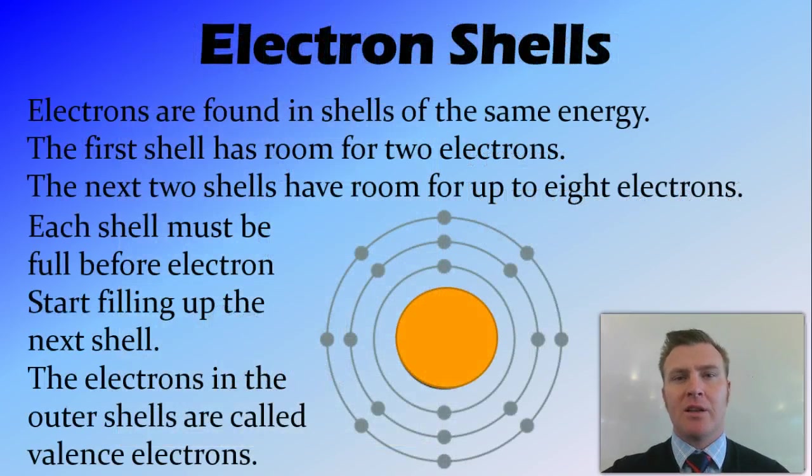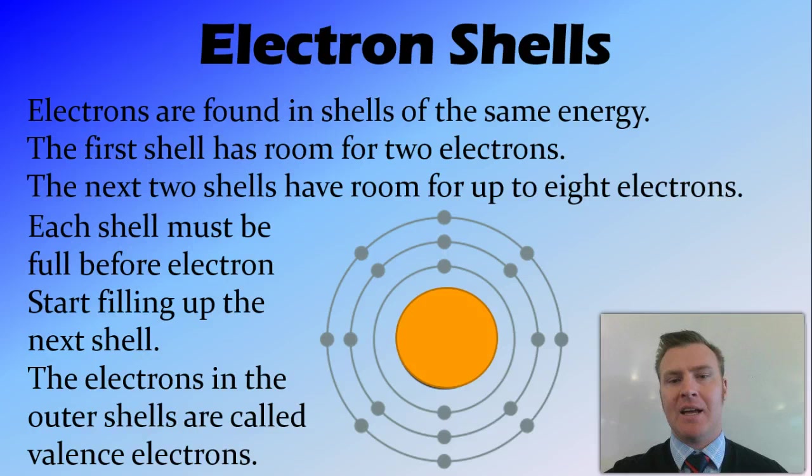Now which shell these electrons fall into will depend on the amount of energy that they have. Each shell has the same amount of energy. The first shell has spot for two electrons only, and the next two shells have spots for eight electrons. So it goes two, eight, eight. And each shell must be full with electrons before you go into the next shell. And this is because as the increasing shells, it increases the energy level. So it's easier for the electrons to fill up those lower energy shells than higher energy shells.